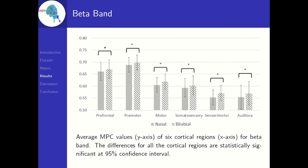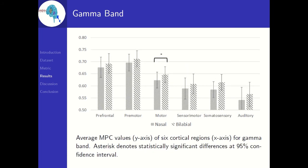This figure shows the MPC values for the beta band. The difference for all the cortical regions considered are statistically significant at 95% confidence interval in the beta band. Coming to gamma band, only the motor cortex has a statistically significant difference in MPC values between nasals and bilabials.